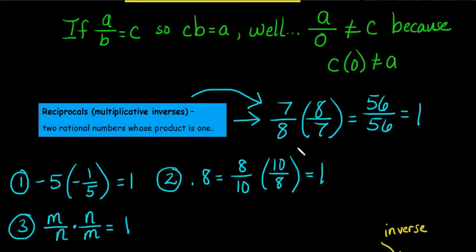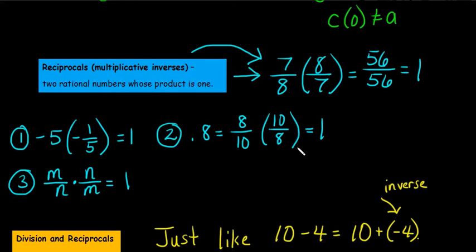All right, what about multiplicative inverses? I kind of like to think of those as opposites. Two rational numbers whose product is one when you multiply them together, those are called reciprocals, multiplicative inverses. So the reciprocal of 7 eighths is 8 sevenths, because when you multiply them you get 56 over 56, and that equals 1. So these two are reciprocals of each other.